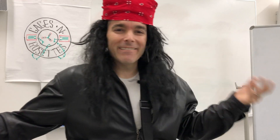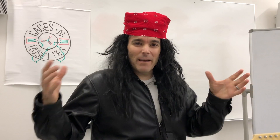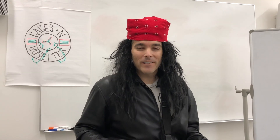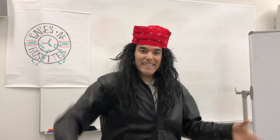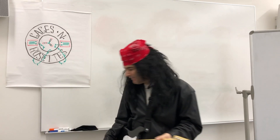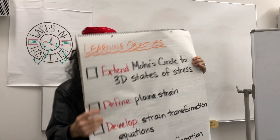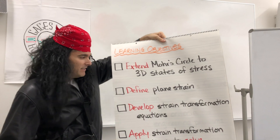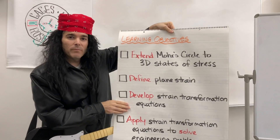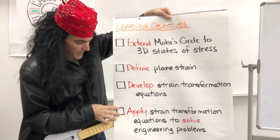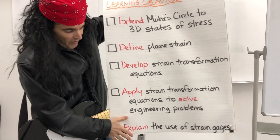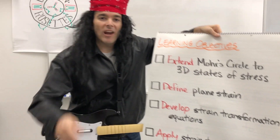Alright, it's great to be here with you today. I'm so excited to take you through some of the stuff we do on strain transformation and also taking you through Mohr's circle in three dimensions. So let's get started and see what we have on tap for today. We have our learning objectives: we're going to extend Mohr's circle to 3D states of stress, then define plane strain, develop the strain transformation equations, and then apply those strain transformation equations to solve some engineering problems. Finally, explain the use of strain gauges.